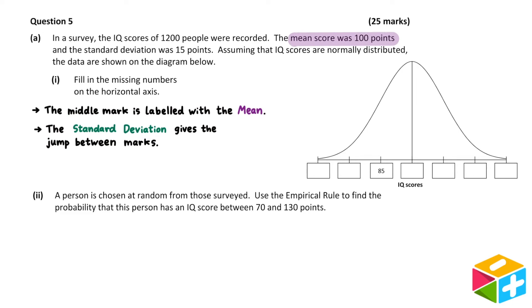And the standard deviation gives the jump between marks. We are told that the mean score was 100 points. So the middle mark should be labeled with 100. In our diagram, we were given the label of the mark before the middle one. It's 85. To get from 85 to 100, we must add 15. So the jump between marks is plus 15. It's not a coincidence that our standard deviation is also equal to 15. As mentioned earlier, it's conventional that the standard deviation gives the jump between marks.